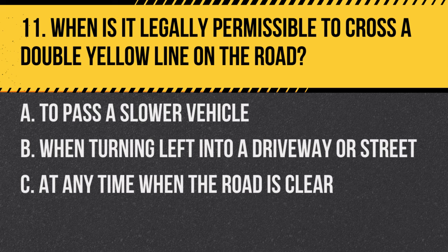Question 11. When is it legally permissible to cross a double yellow line on the road? A. To pass a slower vehicle. B. When turning left into a driveway or street. C. At any time when the road is clear. Answer: B. When turning left into a driveway or street. Crossing a double yellow line is permitted only when making a left turn where it's safe and legal.